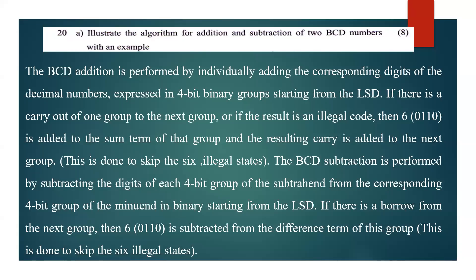This is the algorithm for addition and subtraction of two BCD numbers, with an example. BCD is a valid value from 0 to 9, representing valid states. With the process of BCD addition, we call it decimal numbers corresponding to a 4-bit binary group.